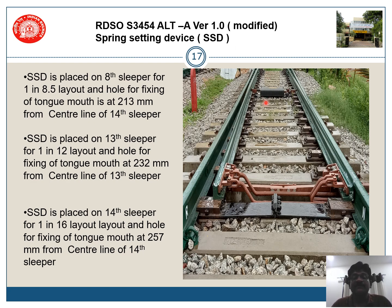Now, where shall the SSD (spring setting device) be placed? In a 1 in 8.5 layout it is provided on the 8th sleeper, while in a 1 in 12 layout it is placed on the 13th sleeper. This is the 60 kg, one in twelve layout. So in this layout the SSD shall be placed on the 13th sleeper, and the hole for fixing the tongue bracket shall be at 232 mm from the center of the 13th sleeper.